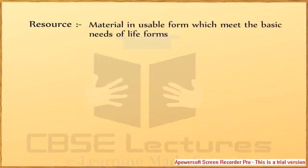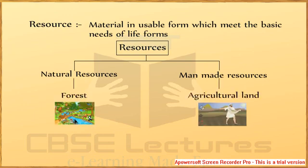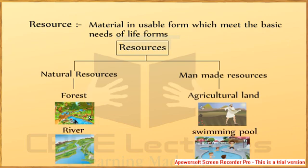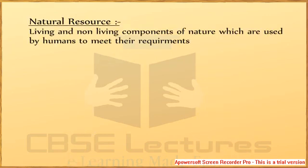Resources are materials in usable form which meet the basic needs of life forms. Resources are of two types: natural resources and man-made resources. Natural resources include forests, rivers, etc. Man-made resources include agricultural land, swimming pools, etc. Natural resources are the living and non-living components of nature which are used by humans to meet their needs.